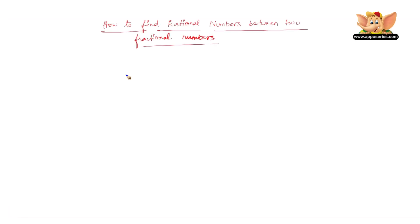Let's now learn how to find rational numbers between two fractional numbers. This is pretty simple. Let us learn this with the help of an example. So let us find a rational number between minus 2 by 3 and 1 by 4.